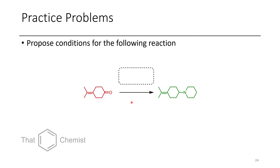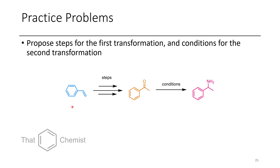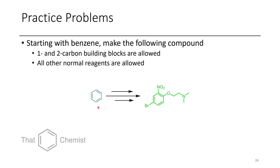I'd like to assign three practice problems for this lecture. First, take this alkene-containing ketone and propose reductive amination conditions to give the product shown. Second, starting with styrene, show how to convert it to acetophenone — there are several approaches — and then convert acetophenone into the phenylethylamide. Third, show over a multi-step synthesis how to convert benzene into the compound shown on the right. You're allowed to use one- and two-carbon building blocks for the methyl and ethyl groups, and every other reagent we've talked about so far in the course.